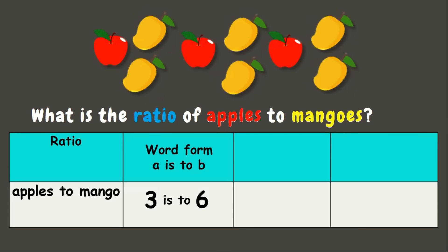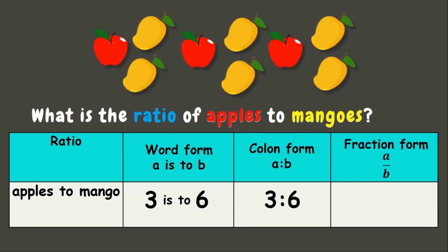For our second way of writing a ratio, we have the colon form. Here, instead of writing the word 'is to,' we replace it with the colon symbol. That makes three colon six, but still read as three is to six. Finally, our last way of writing the ratio is the fraction form.